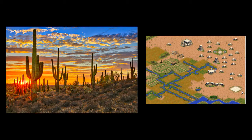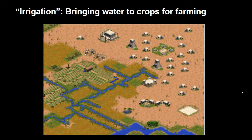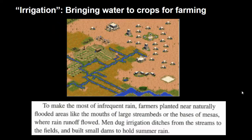Despite this fact, the Indians of the Southwest were able to survive. Some were nomads, but the group we focused on in this reading were called the Pueblo Indians, and they actually became farmers. They were able to farm using a technique called irrigation, which means bringing water to crops for farming. To make the most of infrequent rain, farmers planted near naturally flooded areas. The men dug irrigation ditches from streams to fields and built small dams to hold the summer rain.